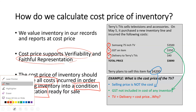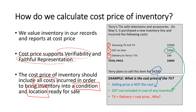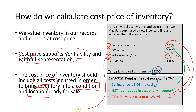What do we have left? We have the item itself and we've got the delivery. The cost price is calculated as the TV plus the delivery. Why? Well, without the delivery we wouldn't be able to get the TV into the location ready for sale. So it is part of the cost because without it we wouldn't actually have that item ready to sell to our customers.